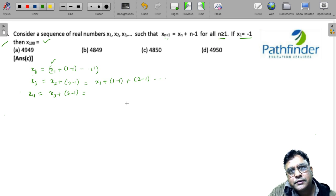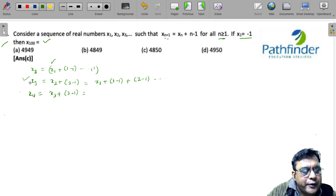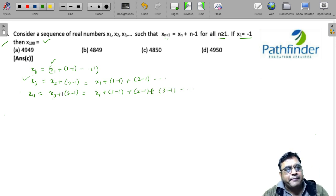I have already calculated the value of x3 from the previous equation, so I can put x3 as x1 + 1 - 1 + 2 - 1 + 3 - 1. Now you can see there is a pattern emerging.